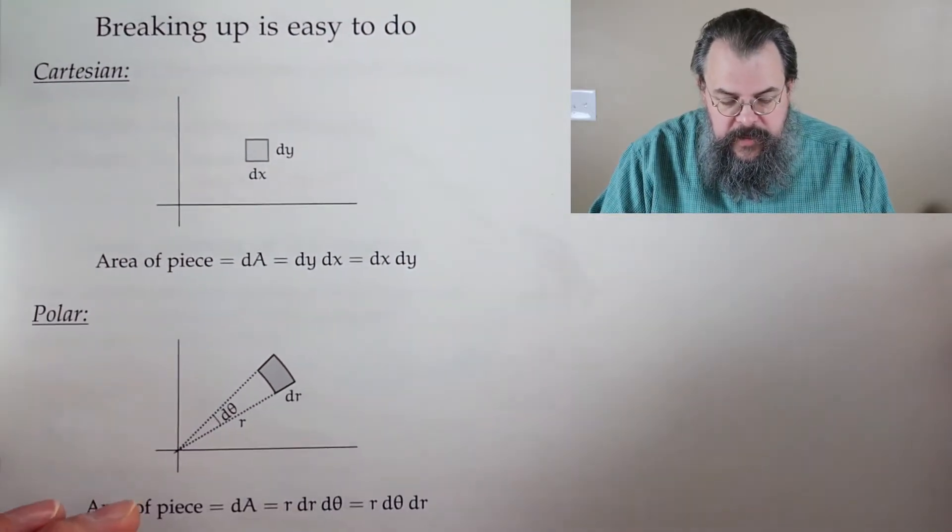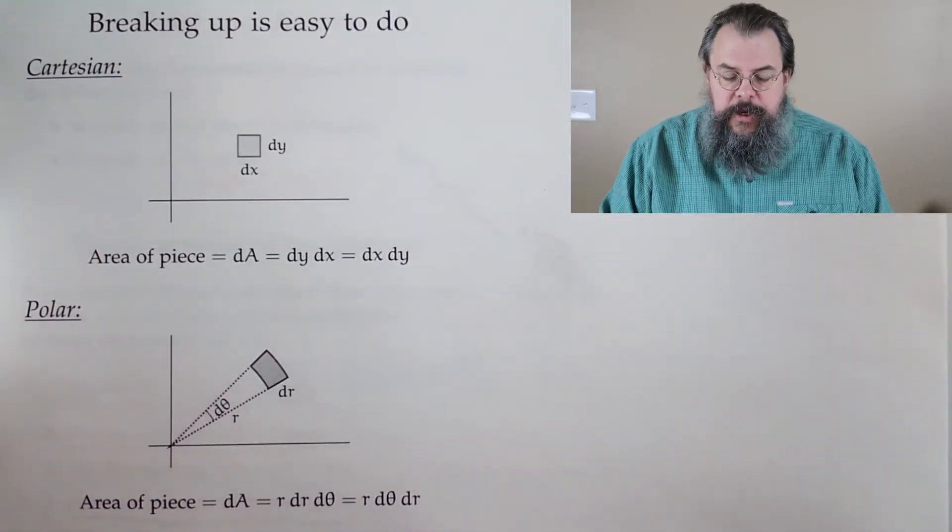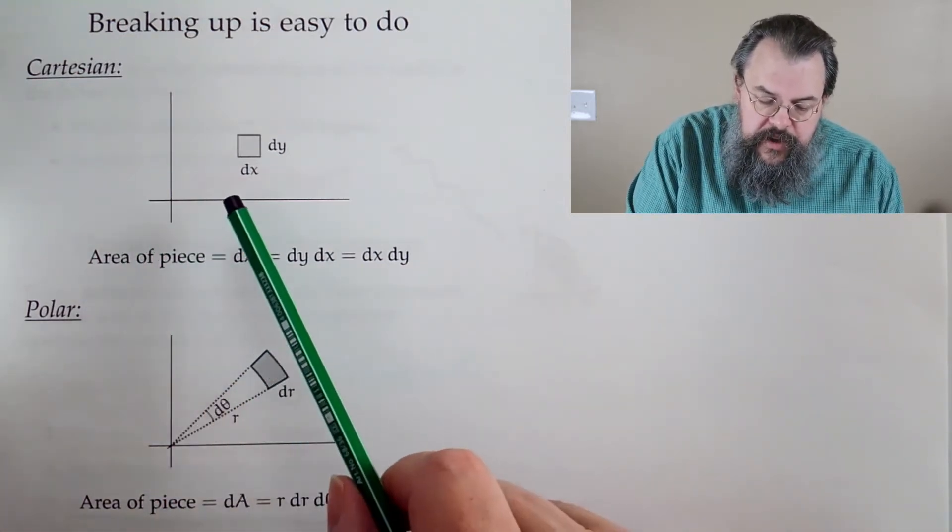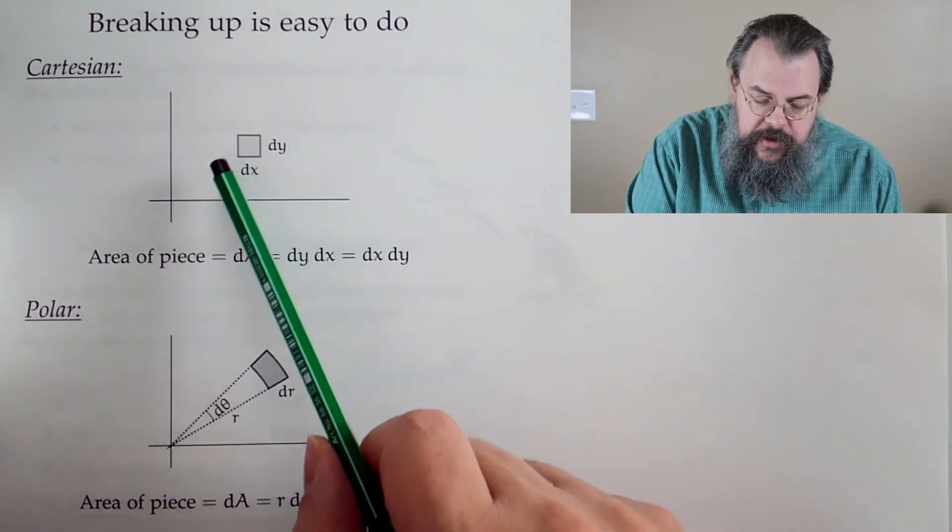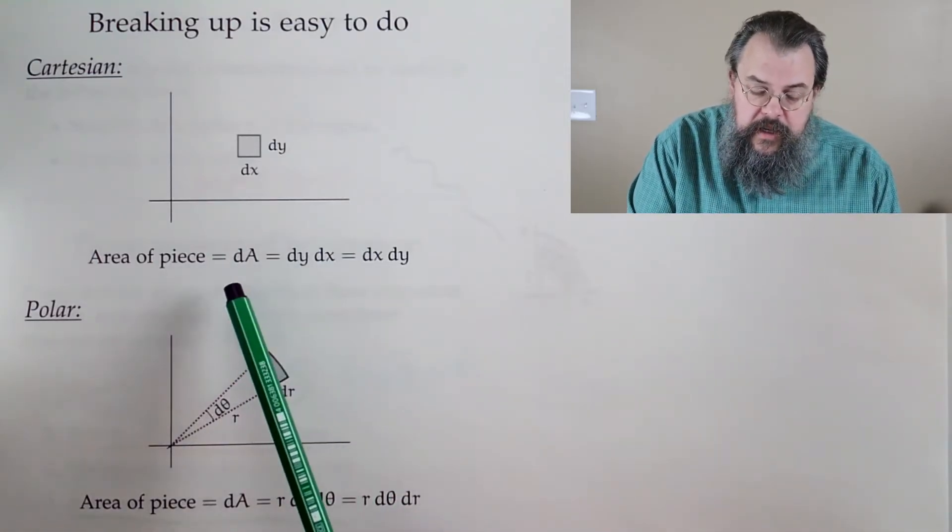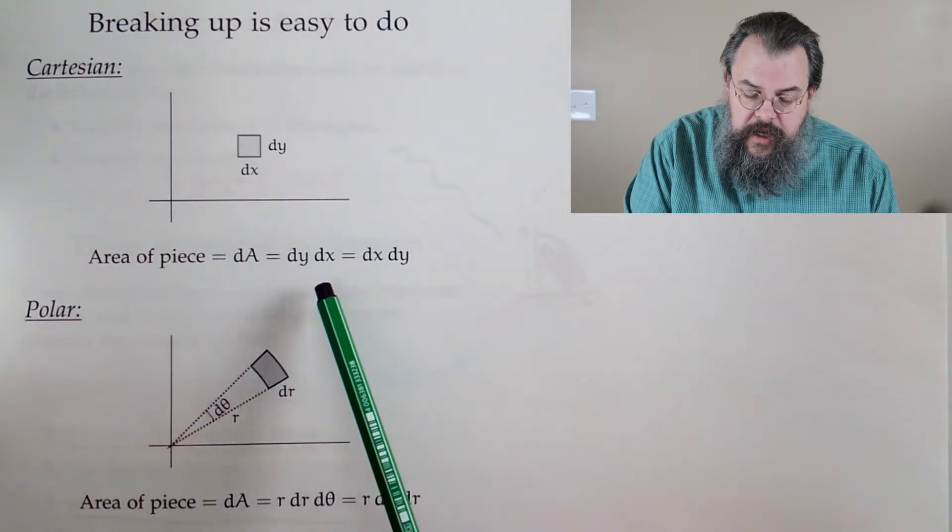All right. So here we go. As we said, look, in Cartesian, what do we break things up to? Well, little rectangles. And what's the area? So our area, dA, it's the area of a rectangle, dy dx, dx dy.